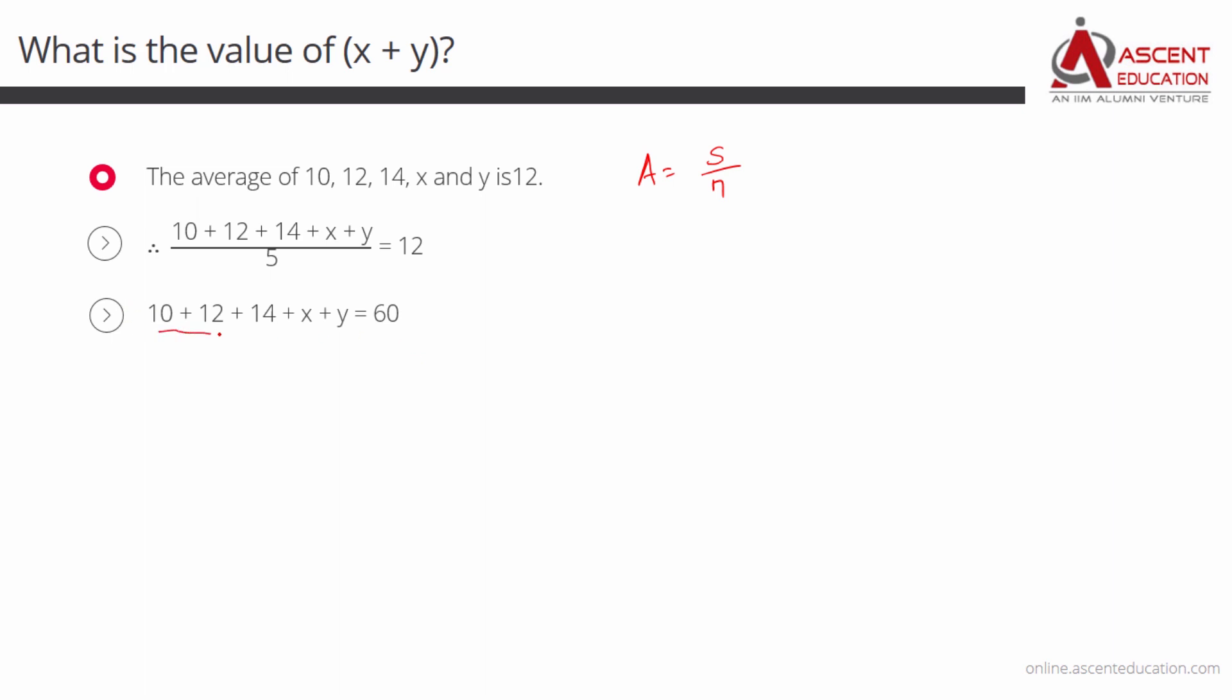This is essentially 10 plus 12, 22 plus 14, 36. So, 36 plus x plus y is equal to 60. So, what is x plus y? If we take this 36 to the right hand side, we get the value of x plus y, which is equal to 24. Choice 2 is the correct answer.